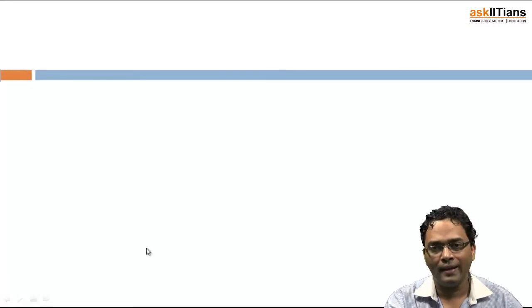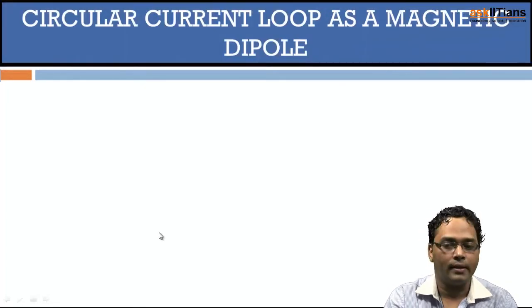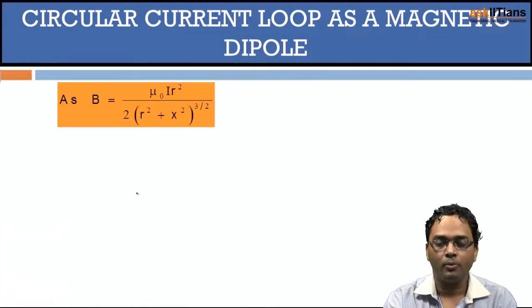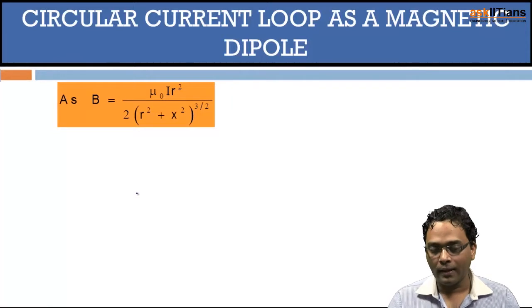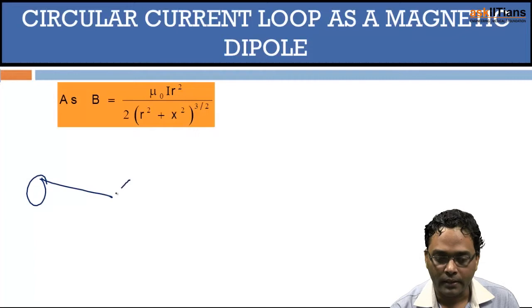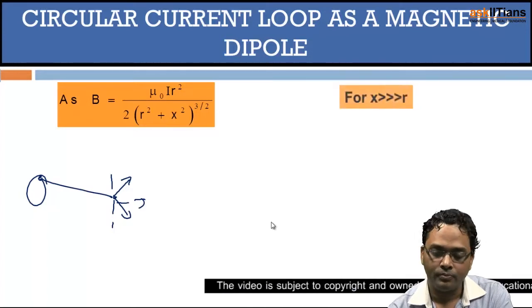Let's understand what exactly is the torque that exists in the case of a circular current loop when it acts as a magnetic dipole. The magnetic field due to any particular loop at any particular point — you take a current element at this point, find the net magnetic field, and the directions give you components that combine to give the net result.